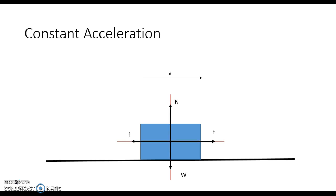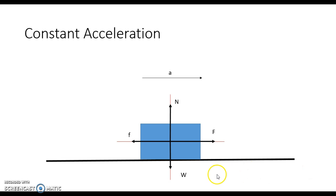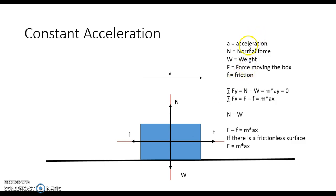Remember, the box is accelerating to the right. We have a force pointing upward which is N, our normal force. We have the force pushing the box to the right, which we'll use capital F for. We have a lowercase f indicating friction acting in the opposite direction, and we have weight that's pulling the box downward. So we have acceleration, normal force, weight, the applied force, and friction.